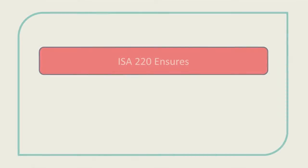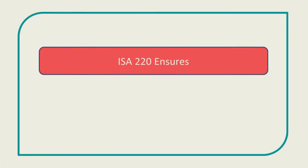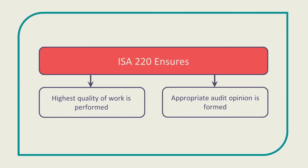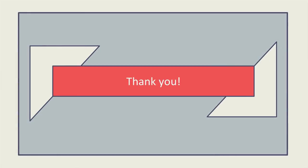Each of these six components is explained in ISA 220 to enable audit firms to ensure the highest quality of work is performed. This therefore ensures that an appropriate audit opinion is formed on the financial statements for every client. I hope you found this video useful. Thank you and good luck.